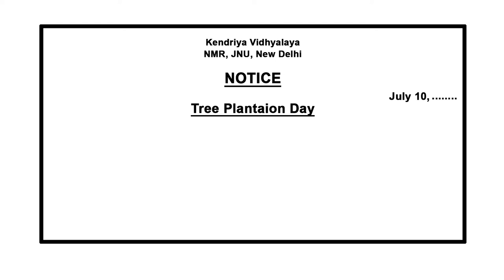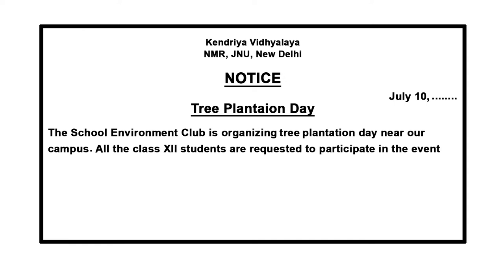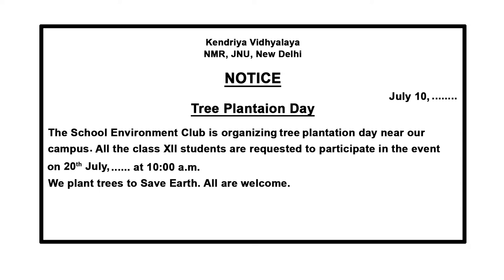Now the outline is ready. First I will write my school's name, after one line I'll write 'Notice,' then the date. After the date we will write the event heading which is 'Tree Plantation Day,' and then start our notice paragraph: 'The School Environment Club is organizing a Tree Plantation Day near our campus. All class 12 students are requested to participate in the event on 20th July 2020.'